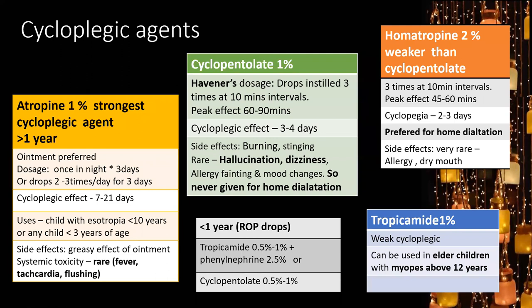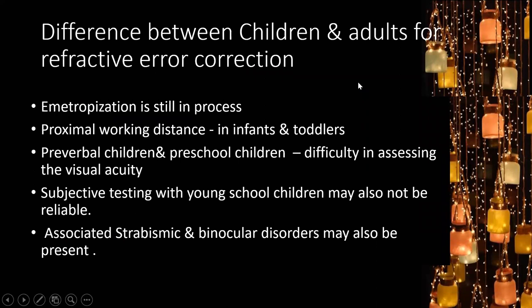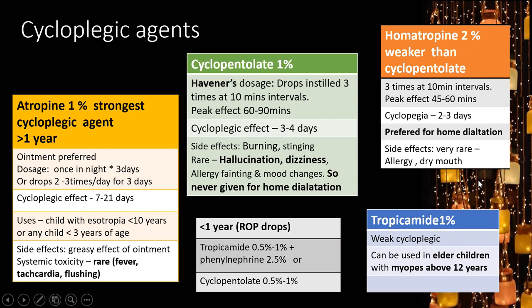Cyclopentolate 1% (Homatropine): drops instilled three times at 10-minute intervals, peak effect at 60–90 minutes, cycloplegic effect lasts 3–4 days. Educate parents because children will have difficulty reading and writing at school during this period. Side effects include burning, stinging, and very rarely hallucinations and dizziness — therefore never given for home dilation. The preferred drug for home dilation is homatropine. Allergy is rare; treat with systemic antihistaminic.